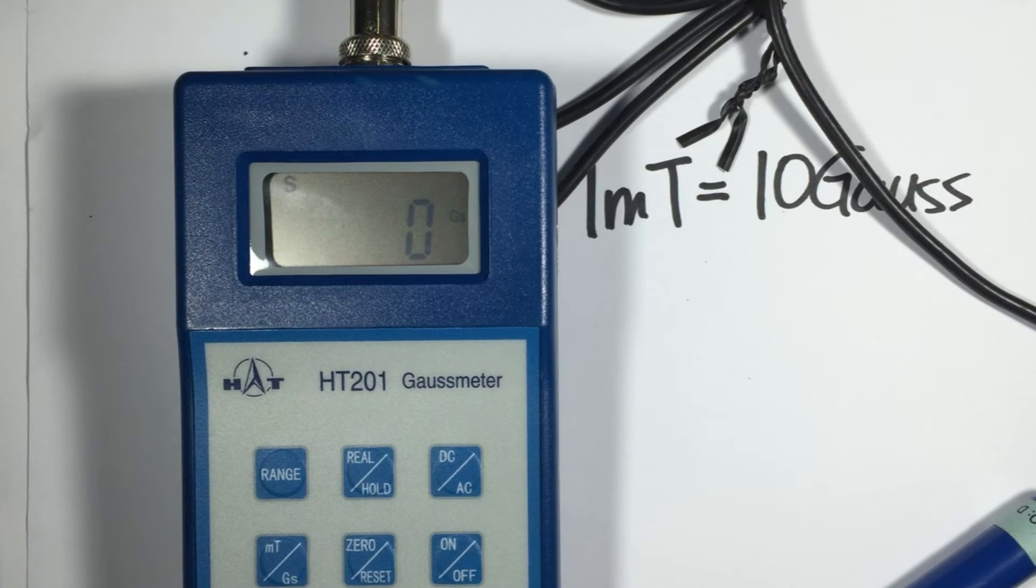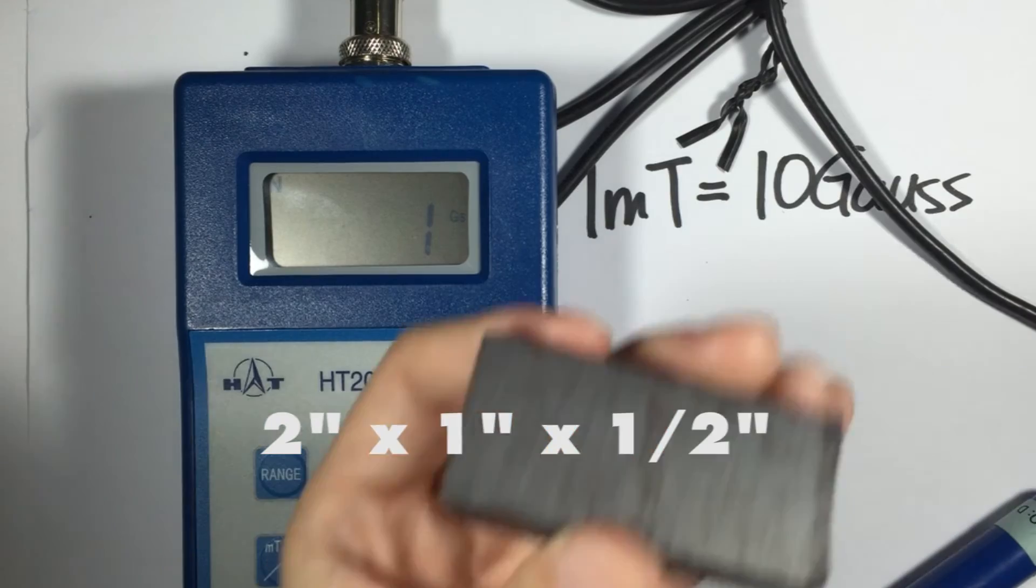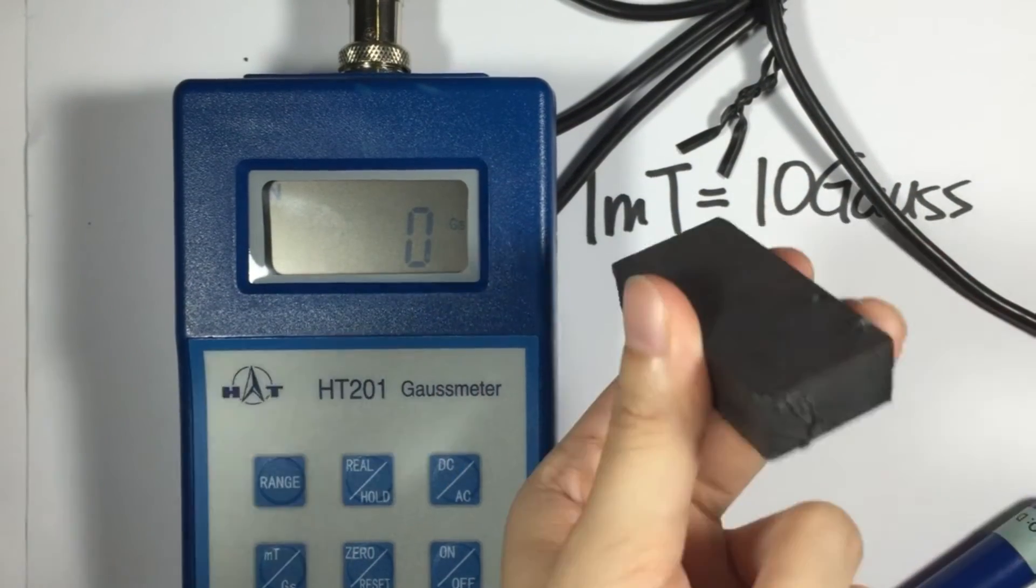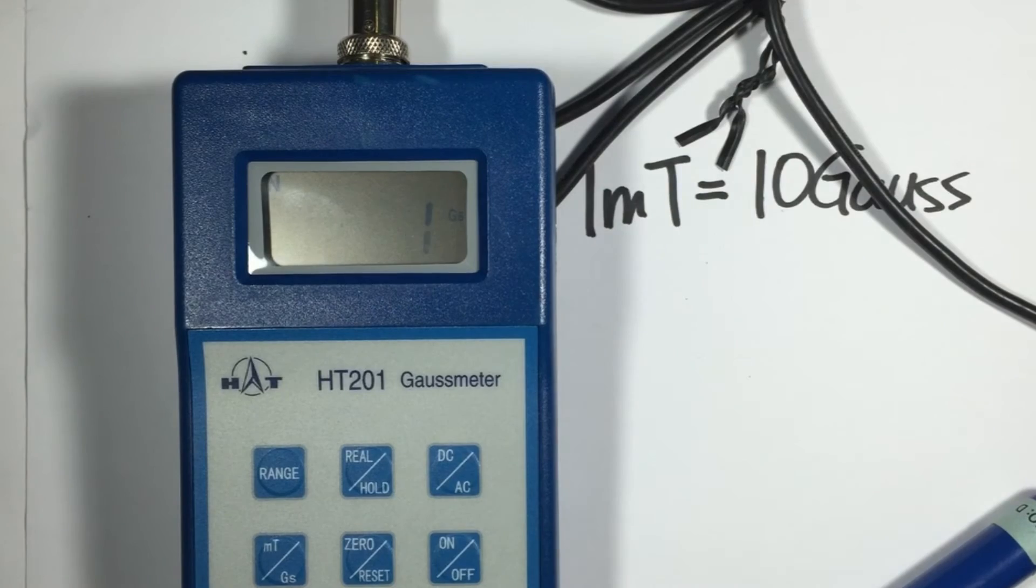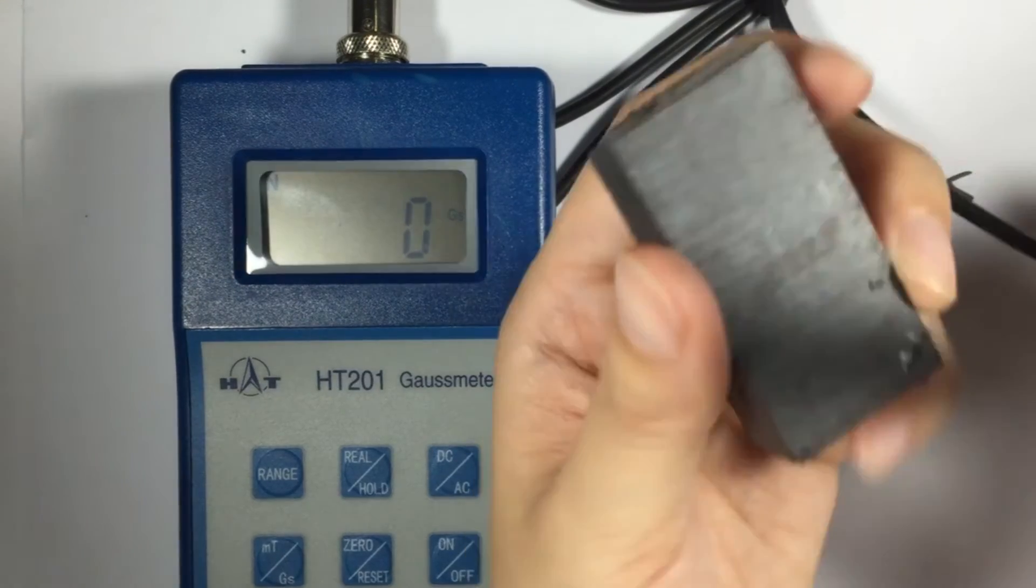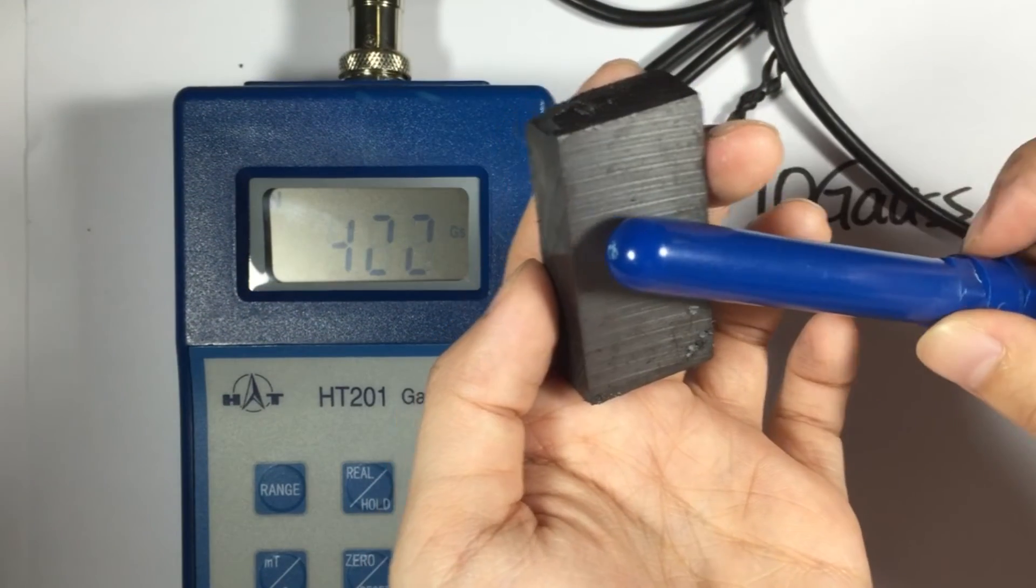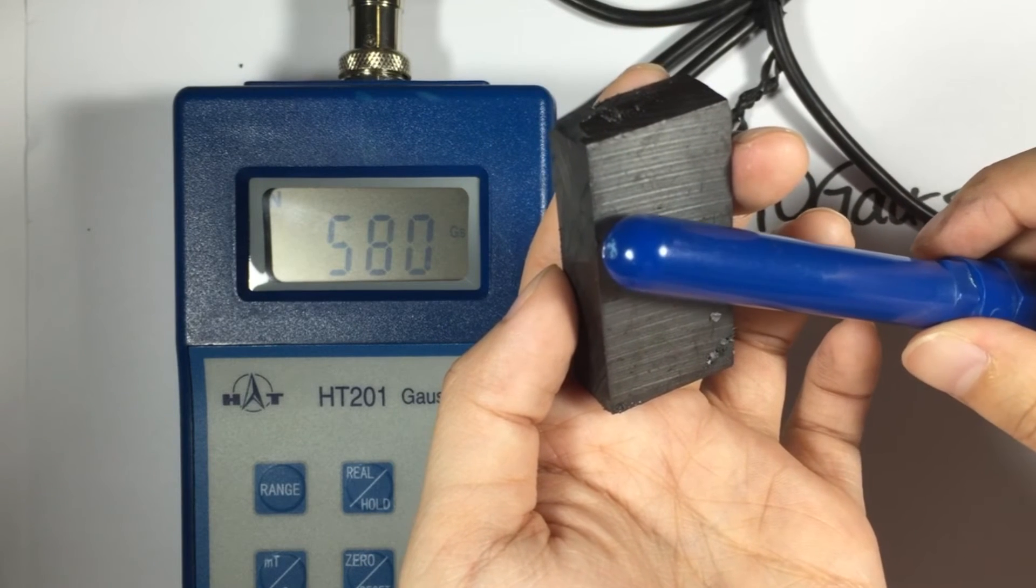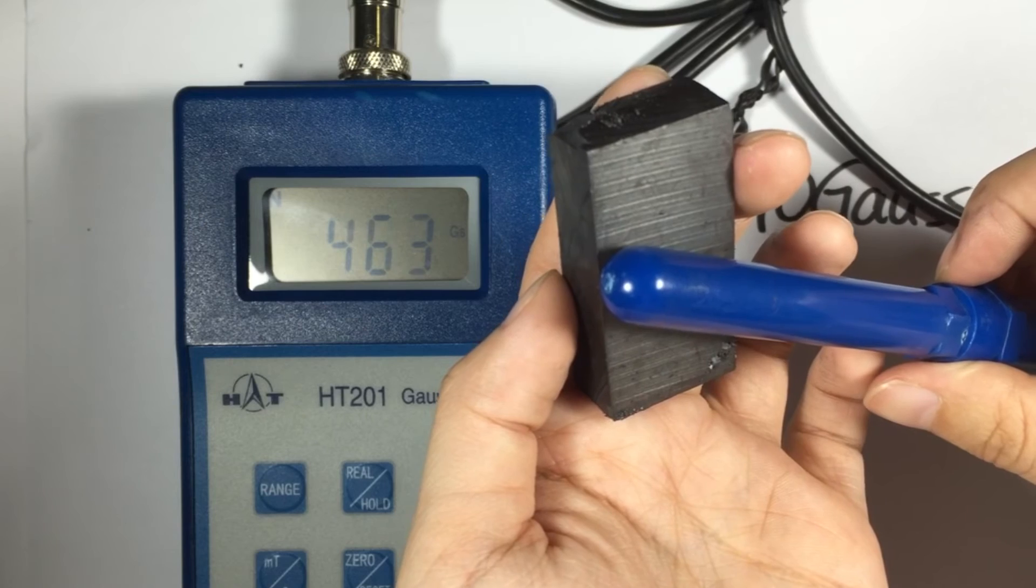Next, we compare two different types of magnets. We have a 2 by 1 by 1 half ferrite and a 2 by 1 by 1 half neodymium. Around 500 gauss.